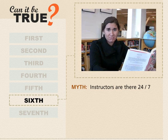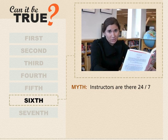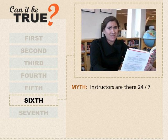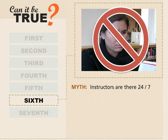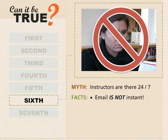Myth 6: Email is basically instant, and I know my teacher checks her email all the time. So if I have a last-minute question or I don't understand an assignment, I can just email her and she should respond right away — she's definitely up at 10 p.m., and it only takes two minutes to respond. This is a misconception all instructors would like cleared up from the outset. Most instructors provide a maximum email turnaround time, typically between 24 to 48 hours. As a student, you need to plan ahead and have an alternate solution if you don't hear back before an assignment is due.